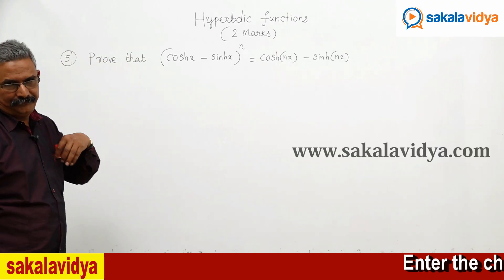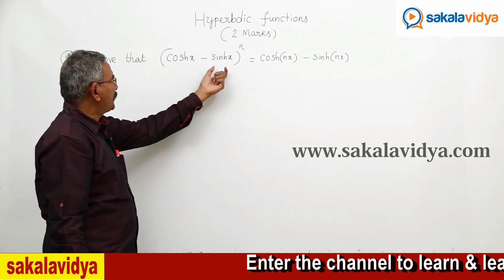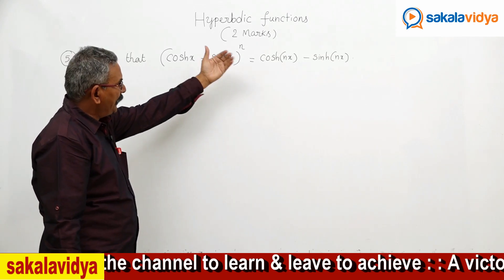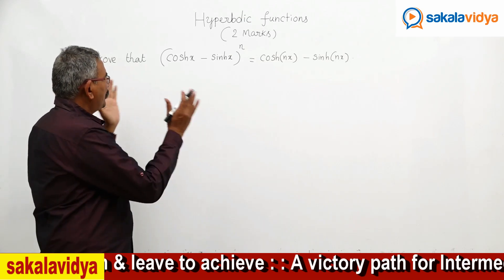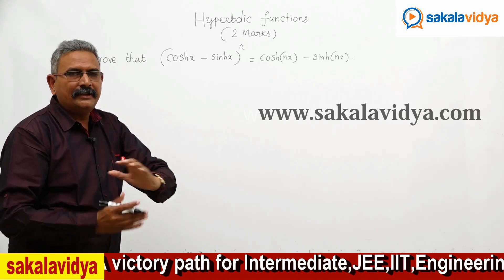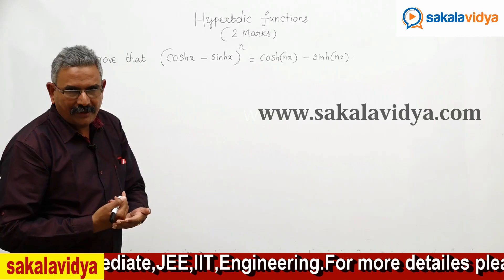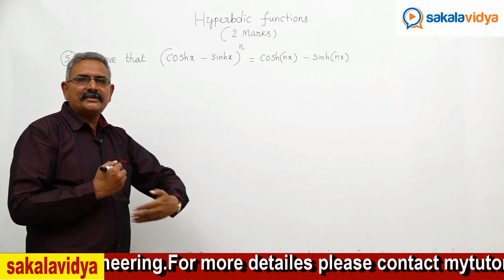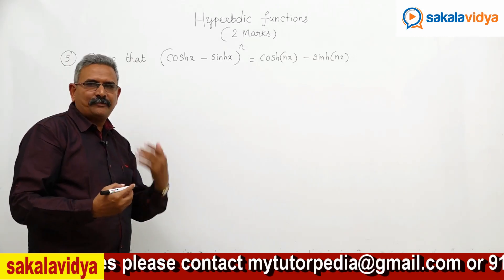Let us solve one more problem. We need to prove that (cosh x - sinh x)^n equals cosh(nx) - sinh(nx). The strategy is: first simplify the left hand side, then simplify the right hand side, and prove that LHS equals RHS using the hyperbolic identities sinh x and cosh x only.